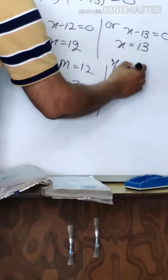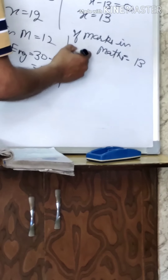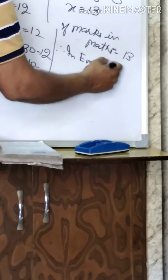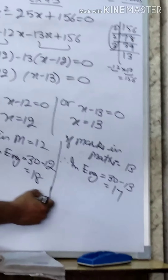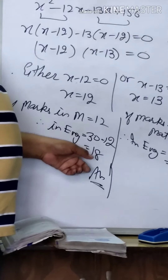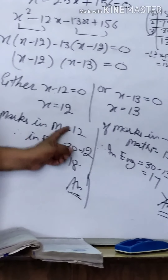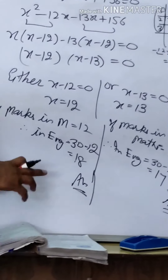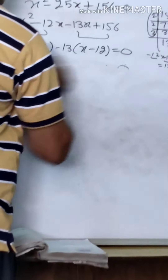In the other case, if marks in Mathematics = 13, then marks in English = 30 - 13 = 17, because the sum of marks in both tests equals 30 as given in the statement. So, my students, both are the answers: 12 and 18 is one answer, and 13 and 17 is the second answer. Both are possible answers.